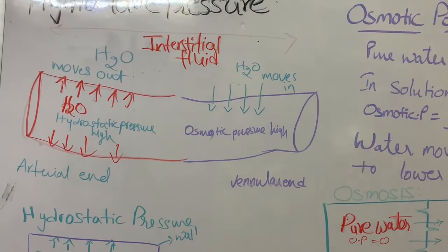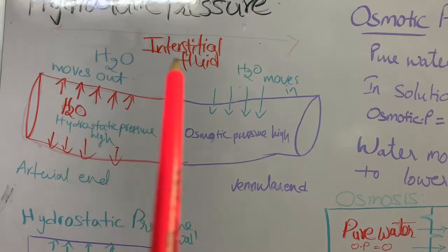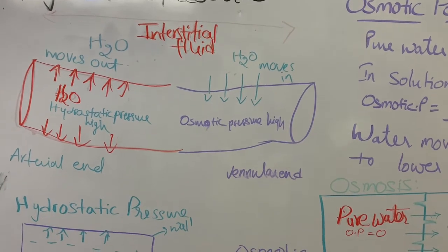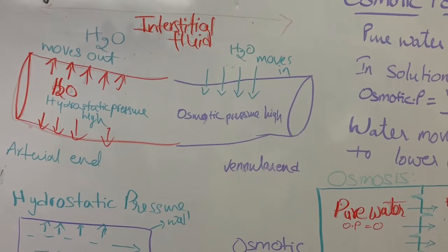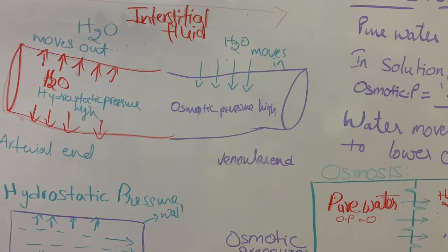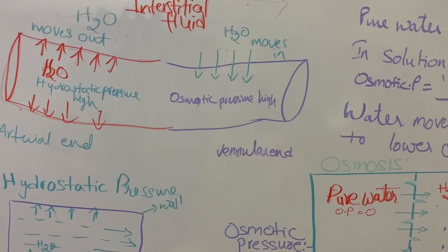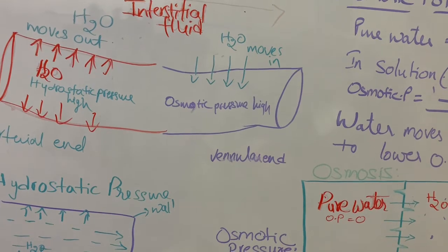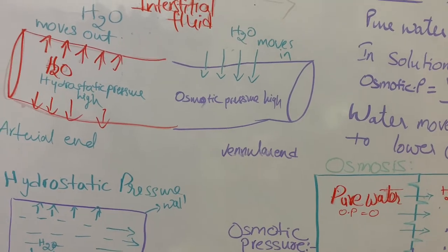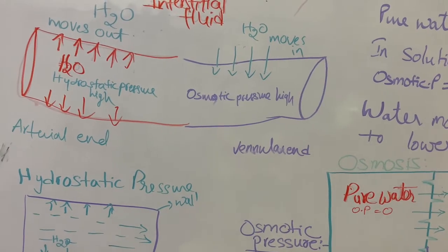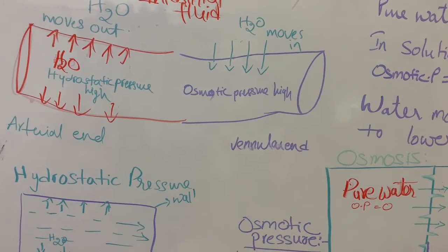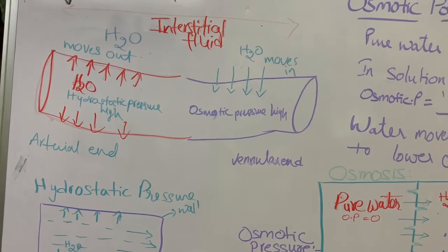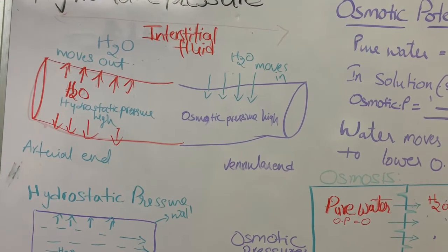If osmotic pressure is absent at the venular end, the water molecules do not enter the vein, and water accumulates in the interstitial fluid — as a result, edema occurs. Edema means bulging out; accumulation of water in the interstitial fluid is known as edema. To prevent edema, albumin present in the blood plays an important role because it produces osmotic pressure in the blood. If protein molecules provide osmotic pressure, that type of osmotic pressure is known as colloidal osmotic pressure or oncotic osmotic pressure. These two chemical processes are very important to maintain the water balance in the body and to understand urine formation.